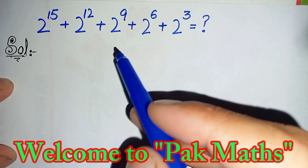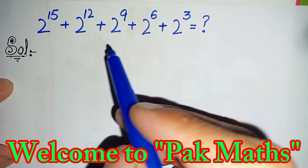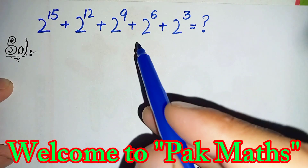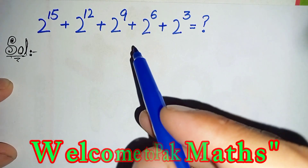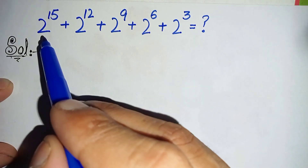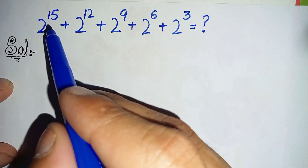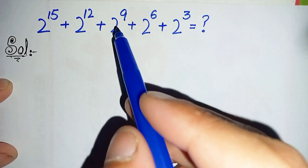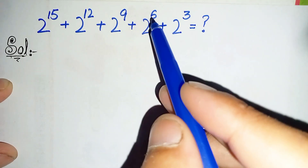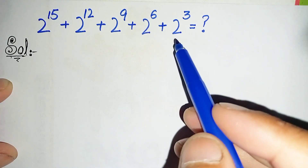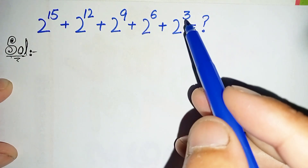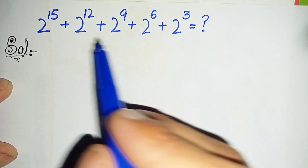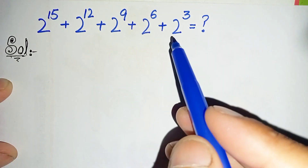Hello, you are welcome. How to solve and find the value of this nice equation: 2 raised to power 15, plus 2 raised to power 12, plus 2 raised to power 9, plus 2 raised to power 6, plus 2 raised to power 3. This is a very beautiful equation having base 2, and the powers are multiples of 3.